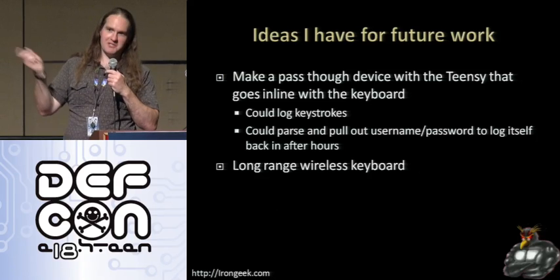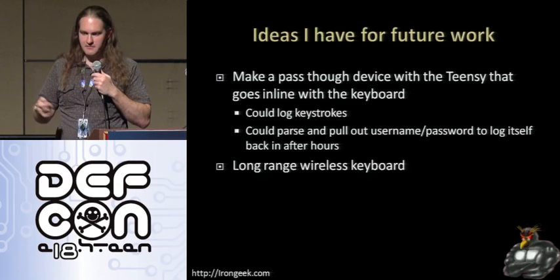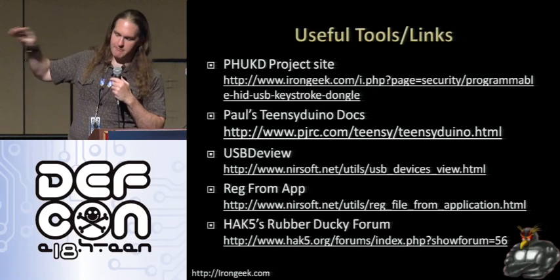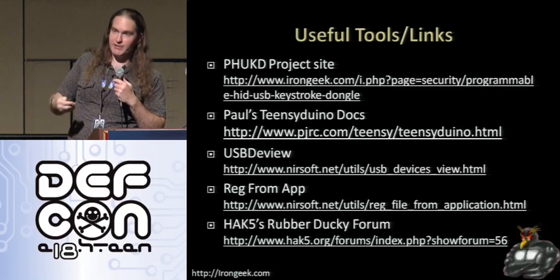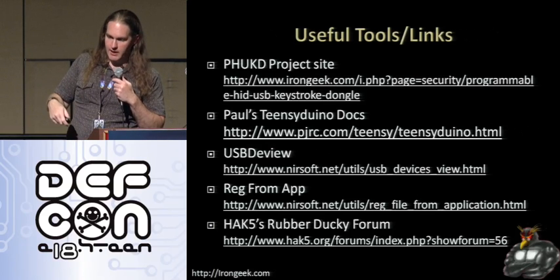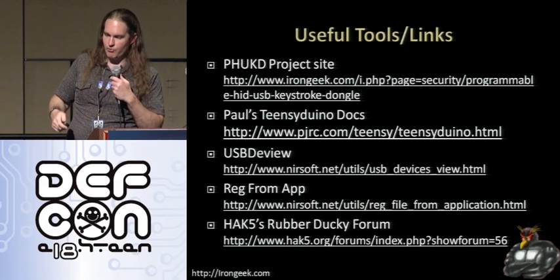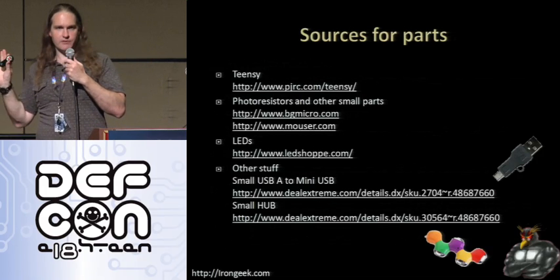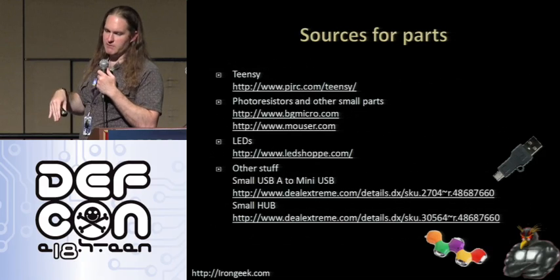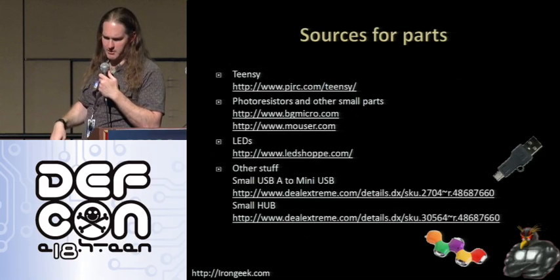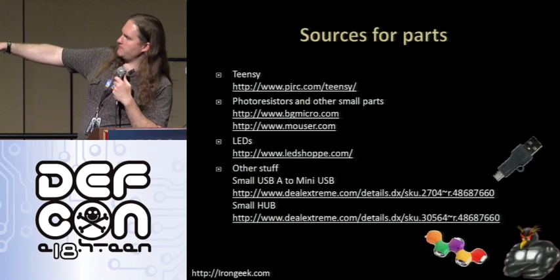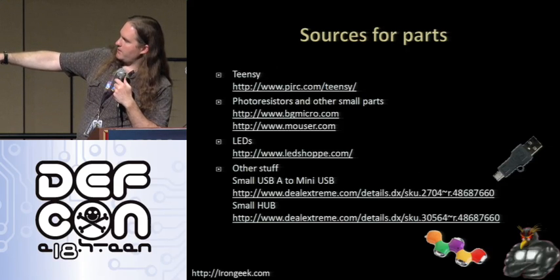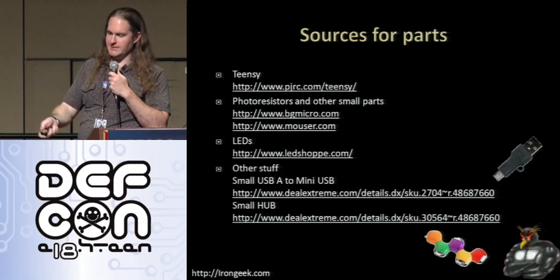Also, long-range wireless keyboards, which the previous speaker has kind of covered. I have various links — my personal site, my project site, USB Device View which is an awesome tool to see what USB devices are currently attached to your system. I've used it a lot for this, so you can see the product ID and vendor ID and know what you want to spoof. RegFromApp was useful for figuring out what applications edit what registry entries. Hack5 has their own Rubber Ducky forum. For parts sources: the Teensy store, BG Micro or Mouser for components, LED Shopping for LEDs, and Deal Extreme for things like that little micro USB adapter and hubs you can take apart and fit inside objects like a mouse.